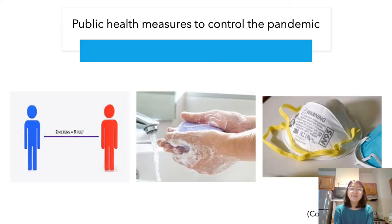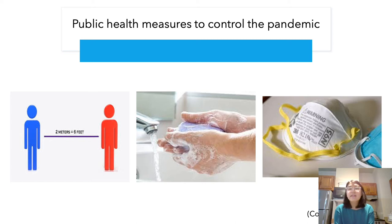There have been several public health measures used to control the pandemic and flatten the curve. The first measure is social distancing, or staying six or more feet apart from anyone who does not live in your household, which reduces the probability of infection. The next is hand hygiene — washing your hands for more than 20 seconds. Lastly, masks have been used to control the pandemic because if everyone is wearing a mask, there are fewer respiratory droplets in the air and therefore less risk of transmission.